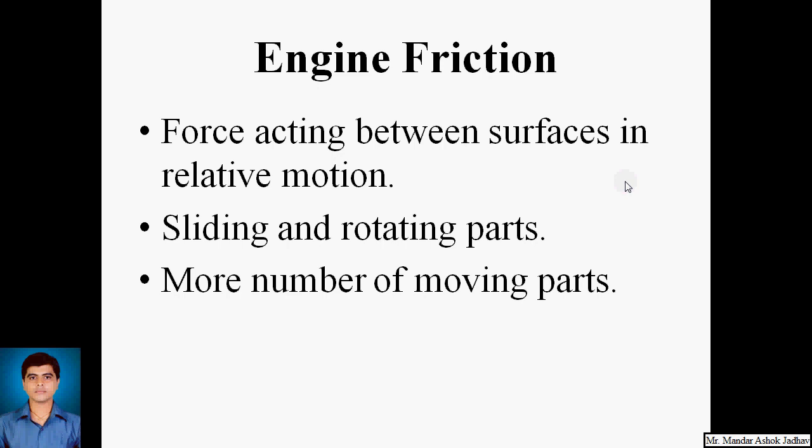Friction is generally referred to as the force acting between surfaces in relative motion. In IC engines, friction losses are mainly due to sliding as well as rotating parts. There is a piston which is reciprocating inside the cylinder, so it will make a sliding contact between piston rings and the cylinder walls. The crankshaft will be rotating through the main bearings, making a rotating pair. So both rotating as well as sliding contacts are present.